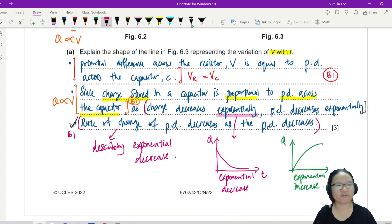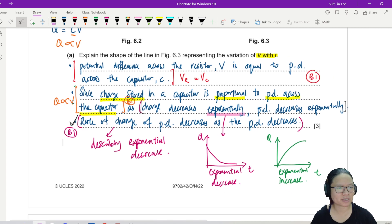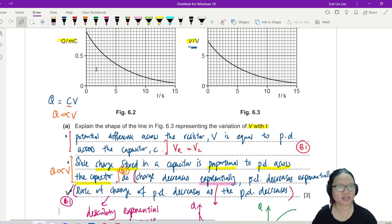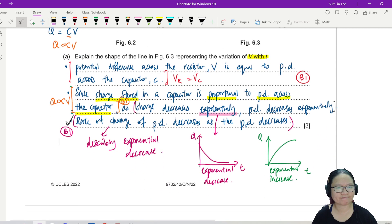You can't fault me because I did a lot of that. So instead of saying rate of PD decreases as PD decreases, I can use the word exponential. Anyway, that's it. That's the explanation. We want to explain why the graph look like this. Alright, next.